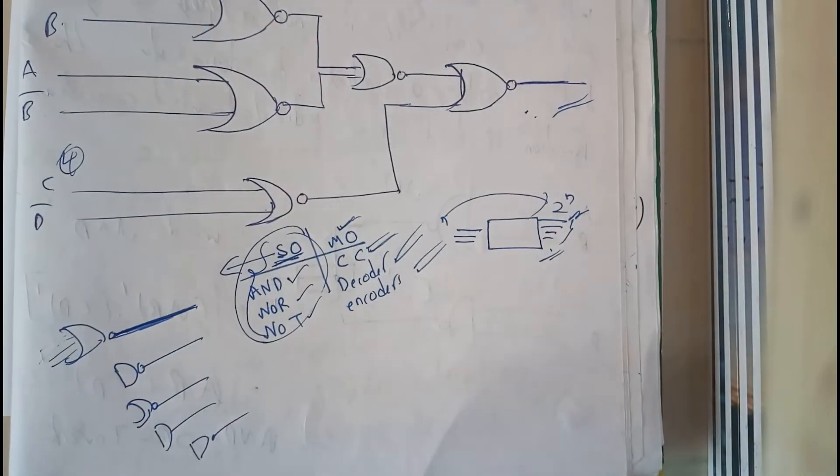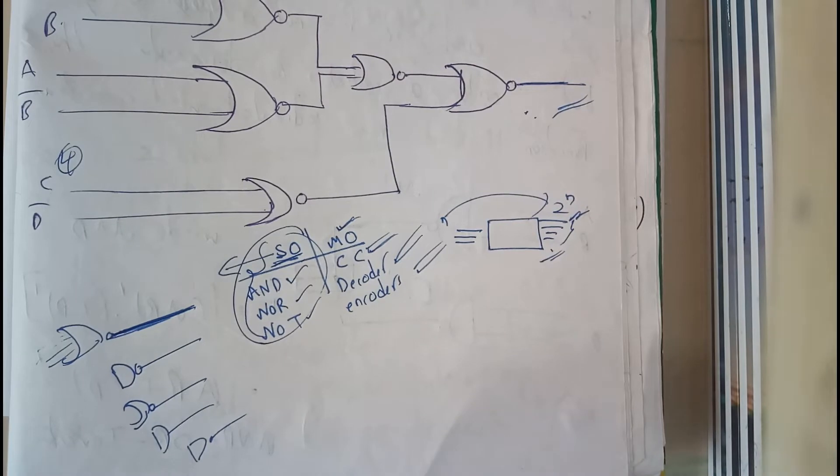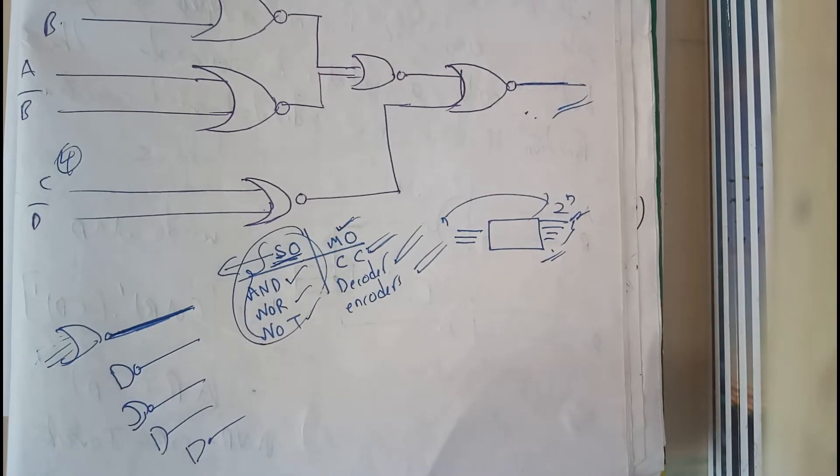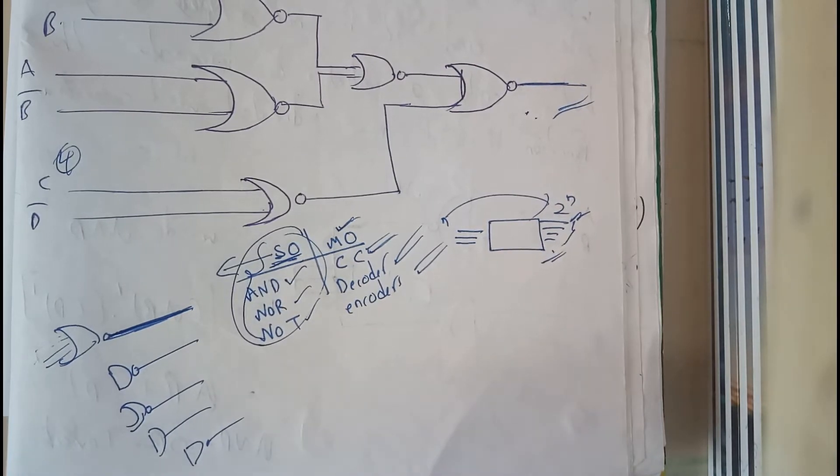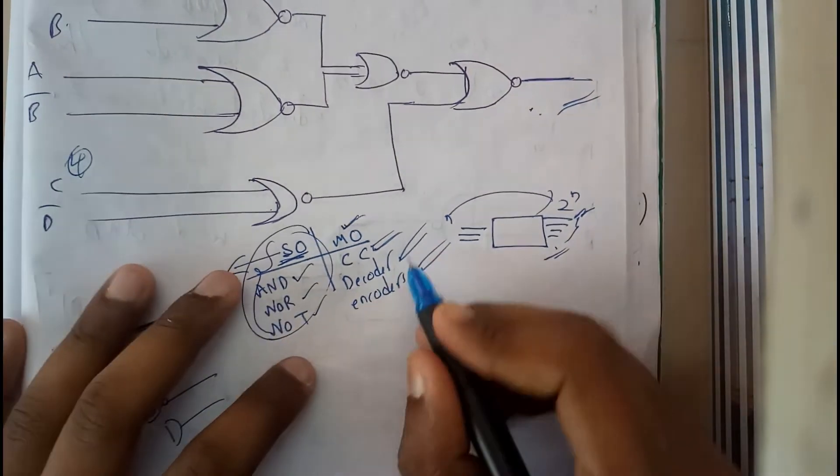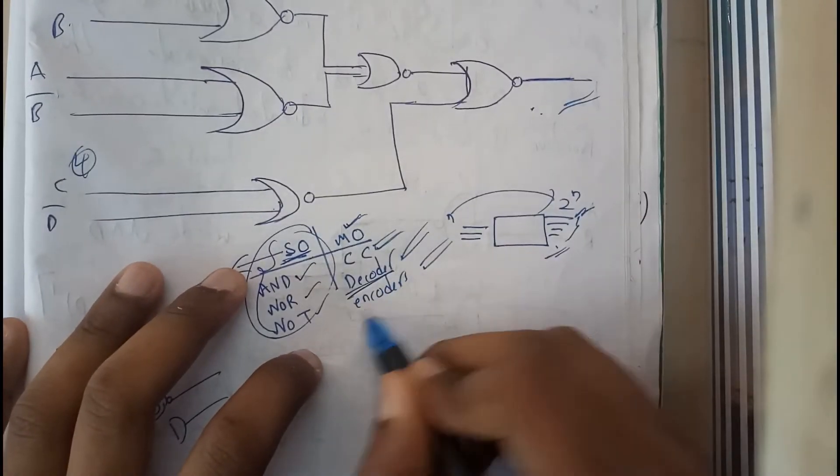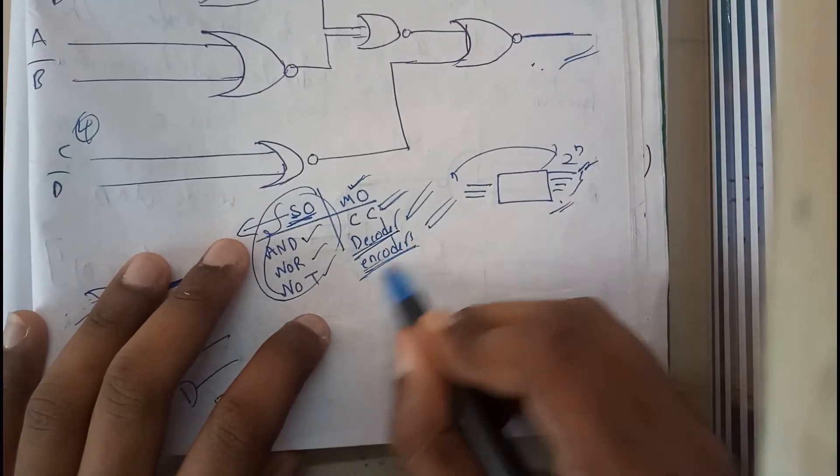In our further tutorials, we will be going through combinational circuits and sequential circuits. In those, we will be having many outputs. Basically, if we assume a decoder or an encoder, we will be having many outputs.